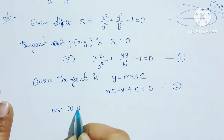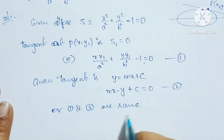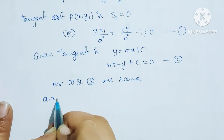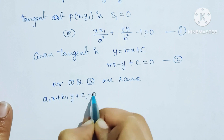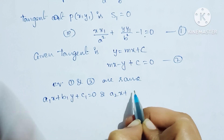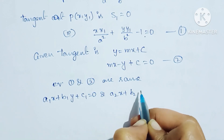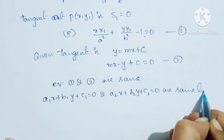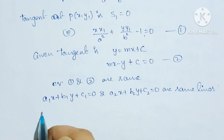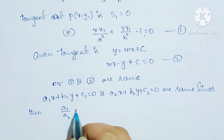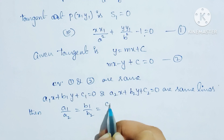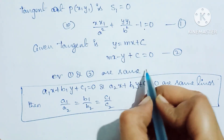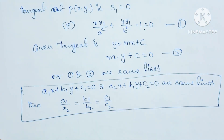Equations 1 and 2 are the same lines — either parallel lines or the same lines. For lines a1x plus b1y plus c1 equal to 0 and a2x plus b2y plus c2 equal to 0 to be the same lines, the condition is a1 by a2 equal to b1 by b2 equal to c1 by c2. Equations 1 and 2 are the same tangent lines.